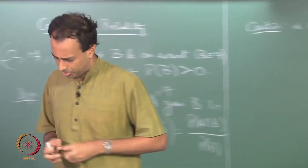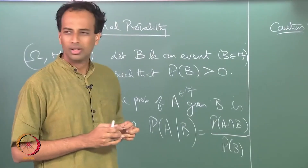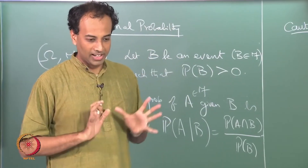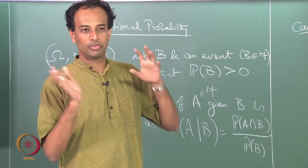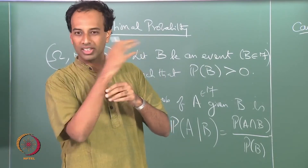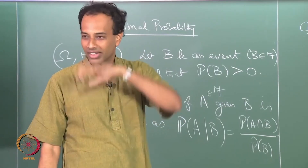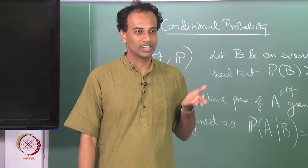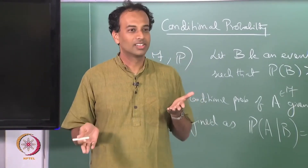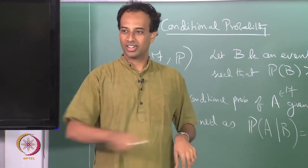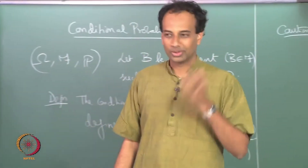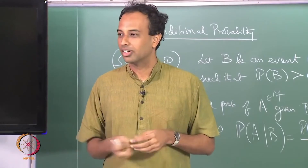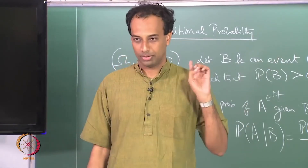Actually, there is a paradox called Borel's paradox, or the Borel-Kolmogorov paradox. It takes a sphere and asks about the conditional distribution of the polar angle, given that you are on one of the diameters, with the uniform measure on the sphere — and you get multiple answers, just like Bertrand's paradox. This paradox gives multiple answers because you are conditioning on a 0-measure set. You can look that up. You can get into all sorts of inconsistent and paradoxical situations if you are not careful about this.